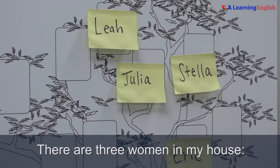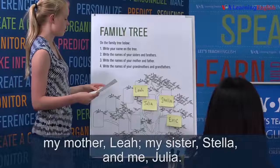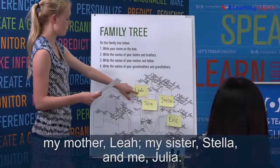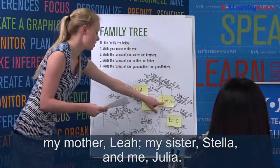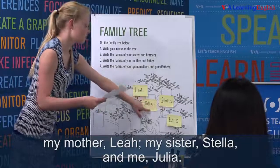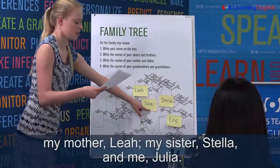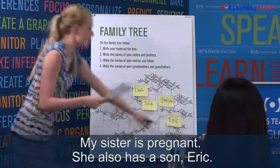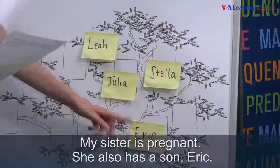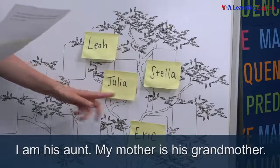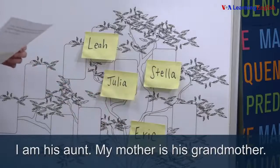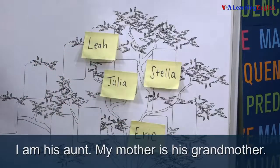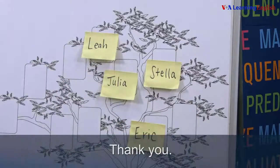There are three women in my house: my mother Leah, my sister Stella, and me, Julia. My sister is pregnant. She also has a son, Eric. I am his aunt. My mother is his grandmother.